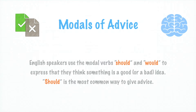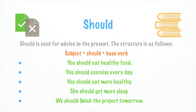English speakers use the modal verbs should and would to express that they think something is a good or bad idea. Los angloparlantes usan los verbos modales should y would para expresar que ellos creen que algo es una buena o una mala idea. Should is the most common way to give advice. Should es la forma más común de dar consejo. Should is used for advice in the present. The structure is as follows. Should es usado para dar consejo en el presente. La estructura es como sigue.